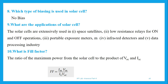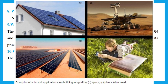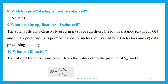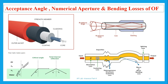Which type of biasing is used in solar cells? No biasing mode. What are the applications of solar cells? They are used in space satellites, portable exposure meters, infrared detectors, and the data processing industry. In this experiment, we mainly focus on efficiency and fill factor. The fill factor is calculated as: FF = (I_max × V_max) / (I_SC × V_OC), where V_OC is the open circuit voltage and I_SC is the short circuit current. Multiplying by 100 gives the value in percent.